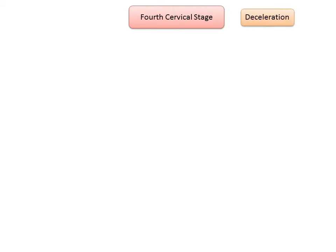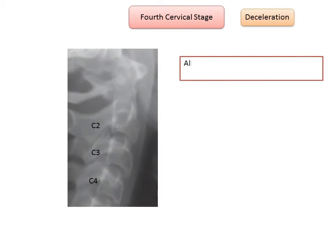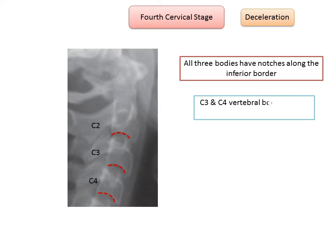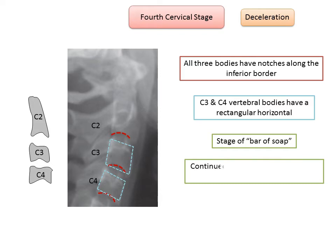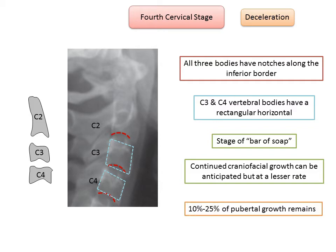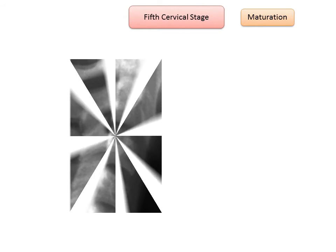The fourth cervical stage, CS4, is the stage of deceleration. All three bodies — C2, C3, and C4 — have notches along their inferior borders. Both C3 and C4 have a rectangular horizontal shape rather than a trapezoidal shape, corresponding to the shape of a bar of soap. Continued craniofacial growth can be anticipated but at a lesser rate compared to the third cervical stage. Ten to twenty-five percent of pubertal growth remains.